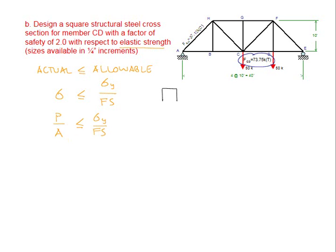We're told to design a square cross-section, so each side is equal and the area will be B squared. Substituting this value along with our numerical values, we can build our equation.